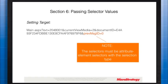Section 6: Passing Selector Values. In linked documents, you can set the target document selectors to be the same values as the source document selector value. For example, if the source document has a selector based on the Year attribute and the current selection is 2011, all selectors in the target document based on Year will be set to 2011. You can add the prevMsgID=0 tag to link selector values. Note that the selectors must be attribute element selectors within the selection type.